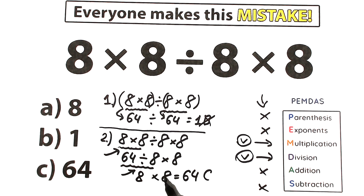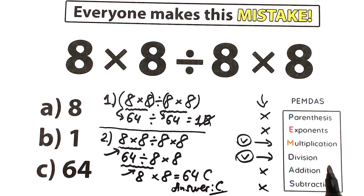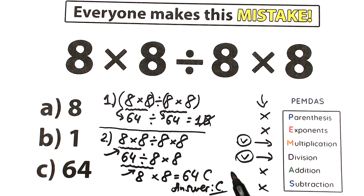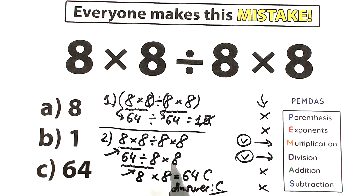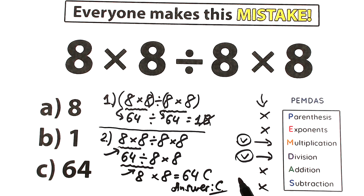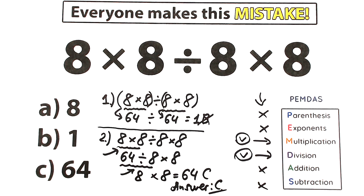So the correct answer is option C — 64. You can also check this in your scientific or graphing calculator. Don't use a regular calculator, because those sometimes just process the problem as you type it in. Use a sophisticated calculator where you can plug in the whole expression — it's smart enough to apply the order of operations strictly from left to right: multiplication, division, multiplication. I hope you understand the explanation. I have lots of videos about pre-algebra and basic math concepts, so see you in the next video — have a great day!